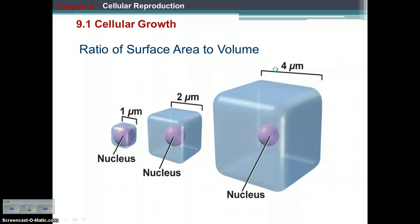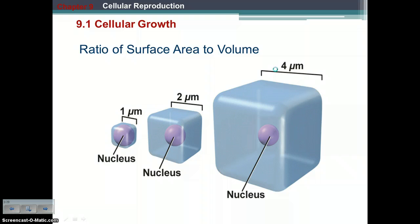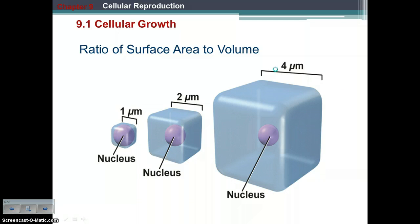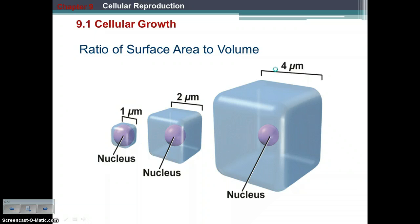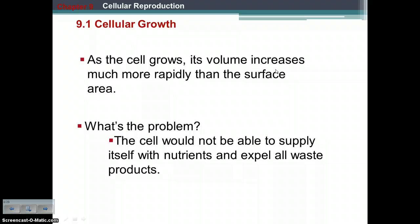Before we talk about how a cell divides, let's talk about why a cell needs to divide. Cells take in nutrients and let out waste. As they do this and go through their normal daily processes, the cell grows and gets larger. The problem is that the volume increases at an exponential rate, faster than the surface area increases.